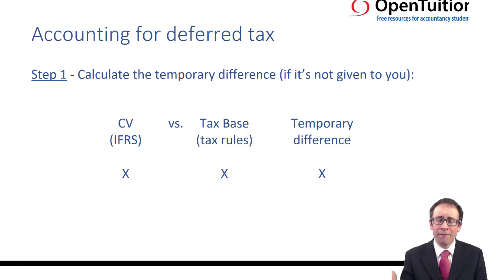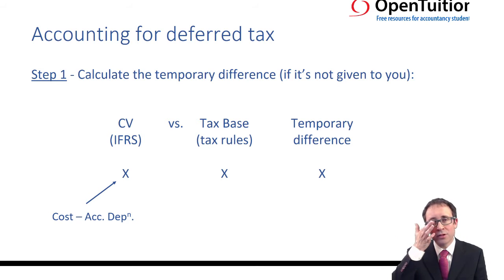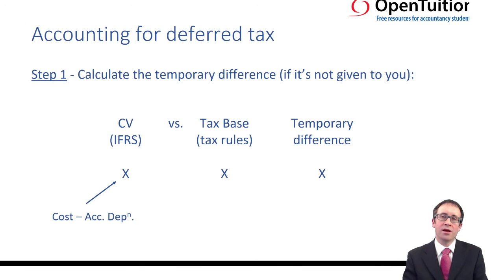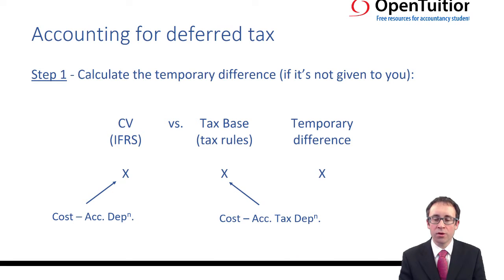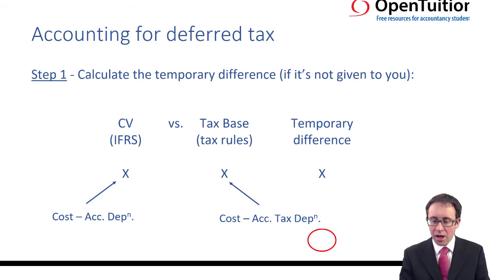In the exam I'm confident you will just be examined on property, plant and equipment — anything else will be examined in Strategic Business Reporting. So the carrying value will be your cost less accumulated depreciation, and your tax base will be your cost less your accumulated tax depreciation, using that working we saw earlier. The temporary difference is the difference between the two, and that's step one completed.